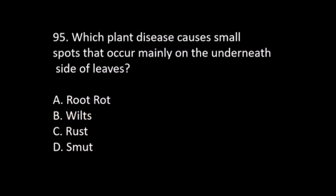Number 95. Which plant disease causes small spots that occur mainly on the underside of leaves? A. Root rot. B. Wilts. C. Rust. D. Smut.